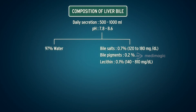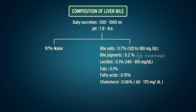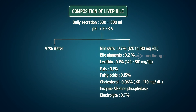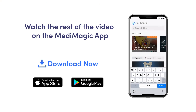Fats account for 0.1%, fatty acids 0.15%, and cholesterol 0.06%, at 60 to 170 milligrams per deciliter. The enzyme alkaline phosphatase helps in converting organic phosphate to free phosphate. Electrolytes constitute 0.7% of bile composition.